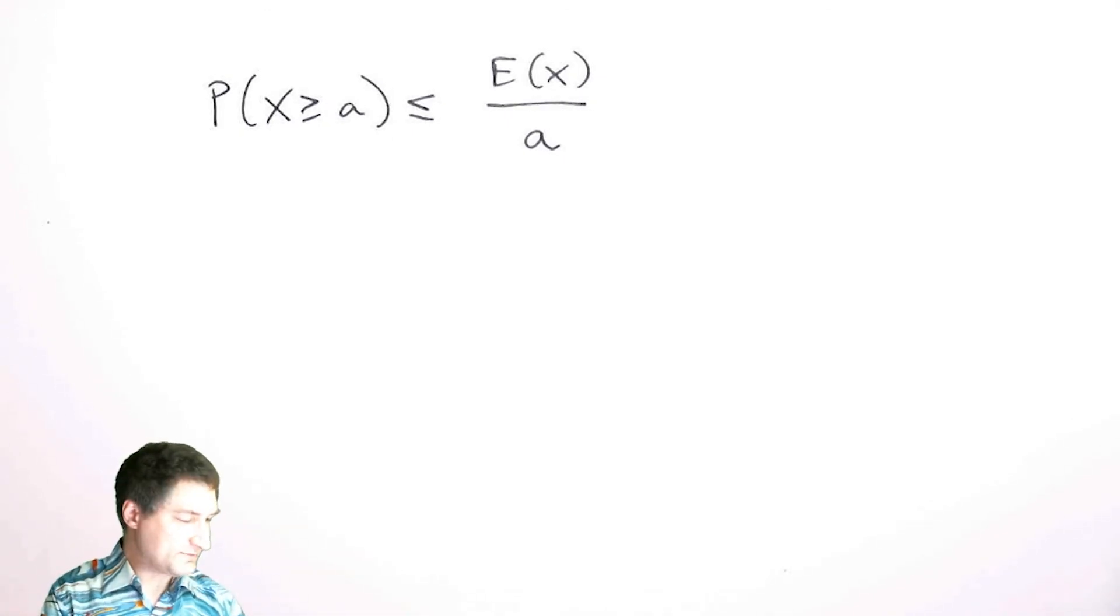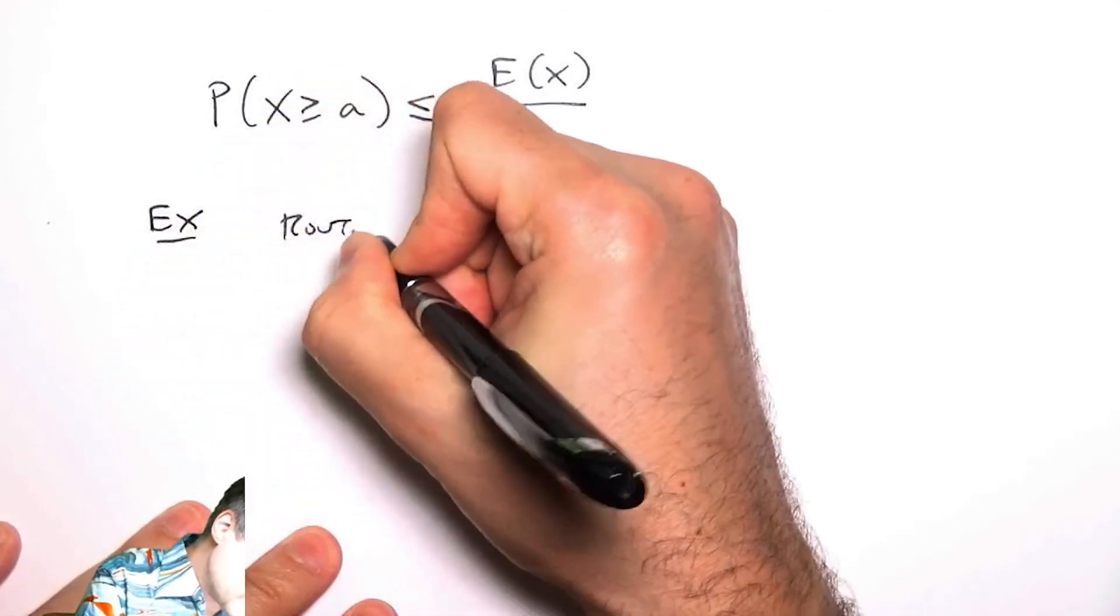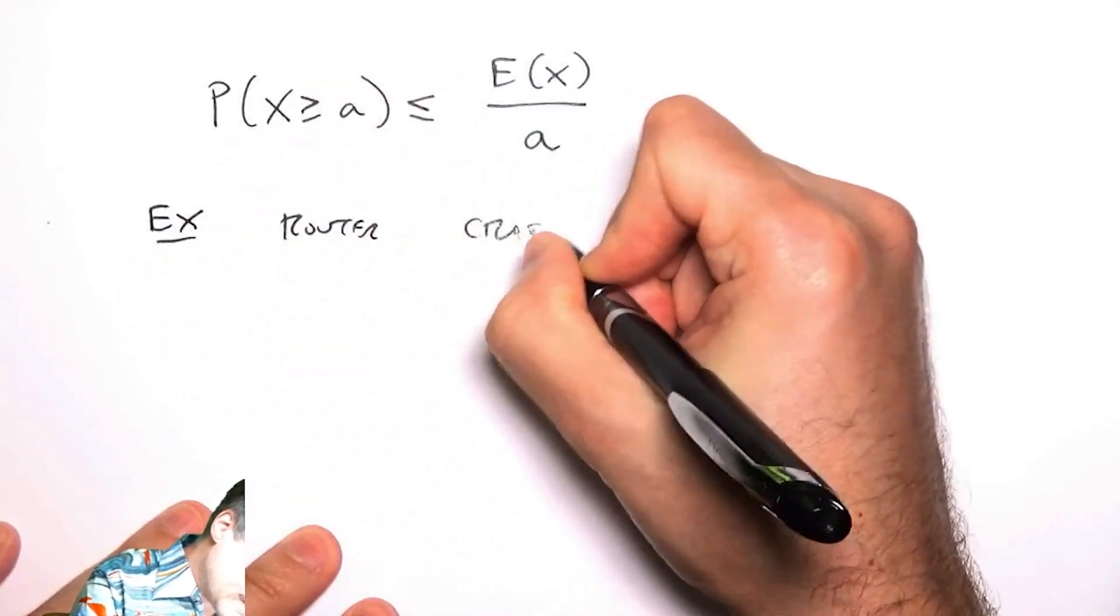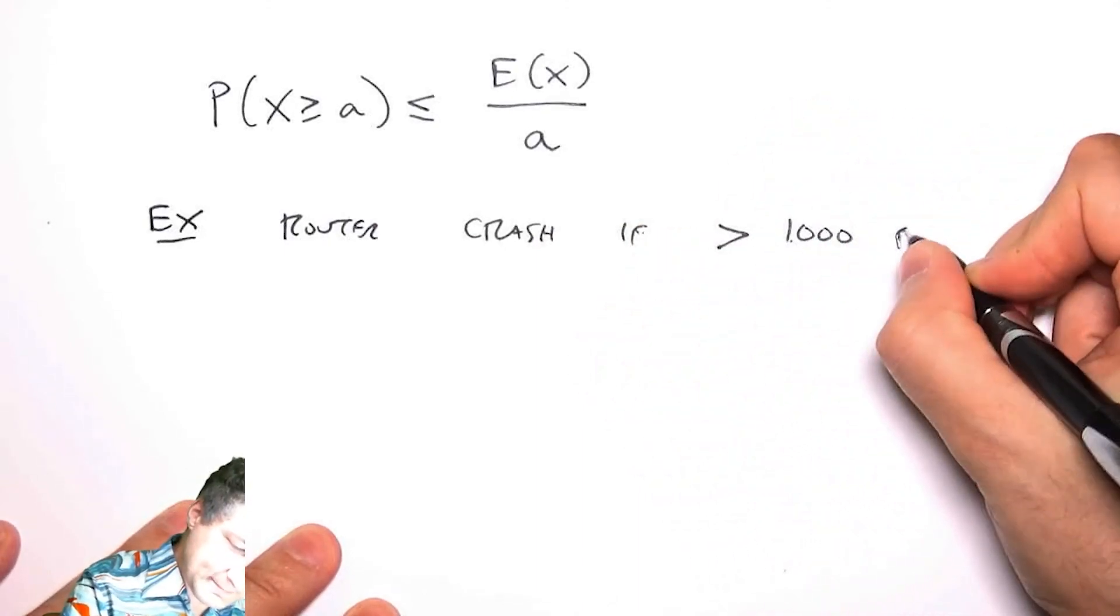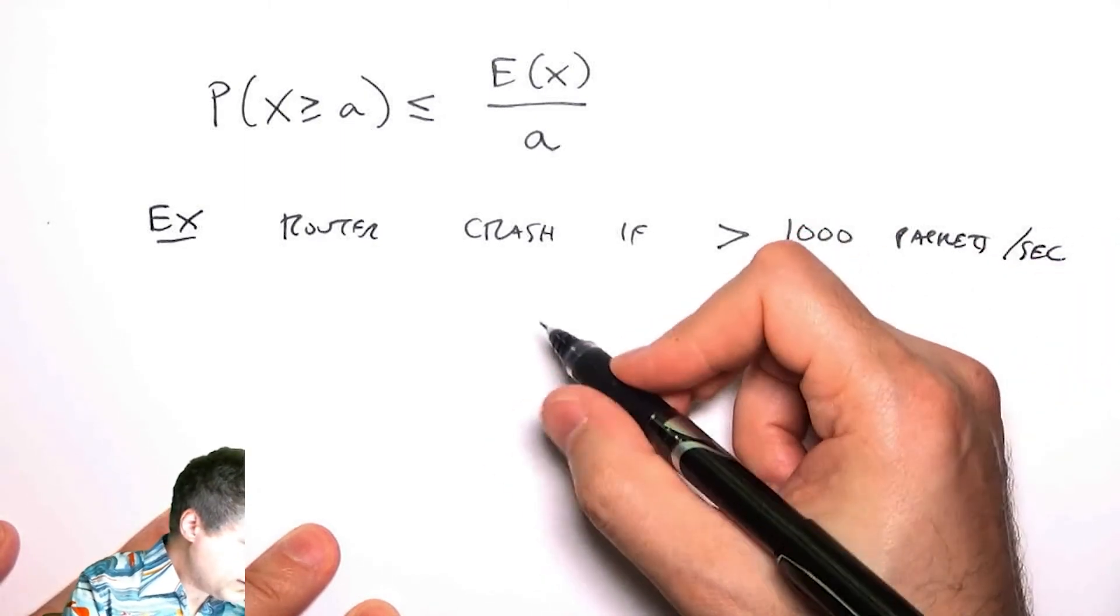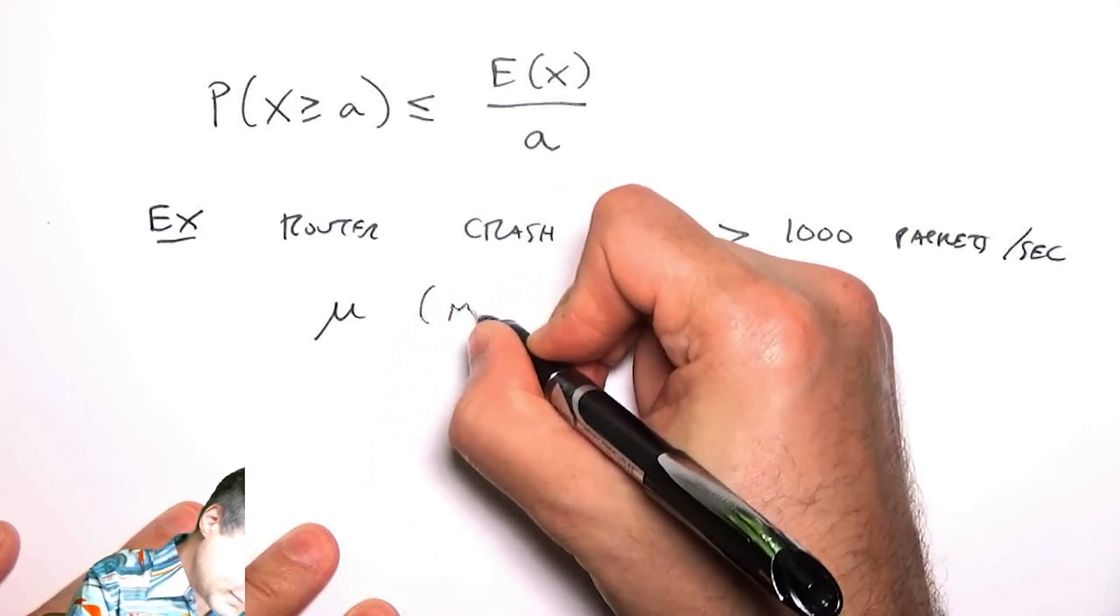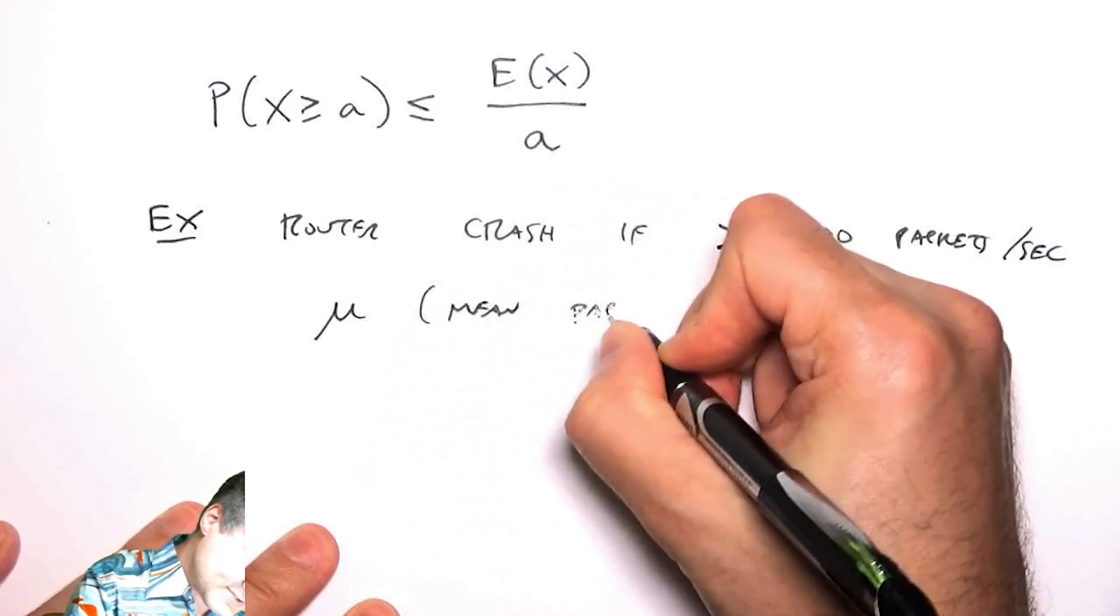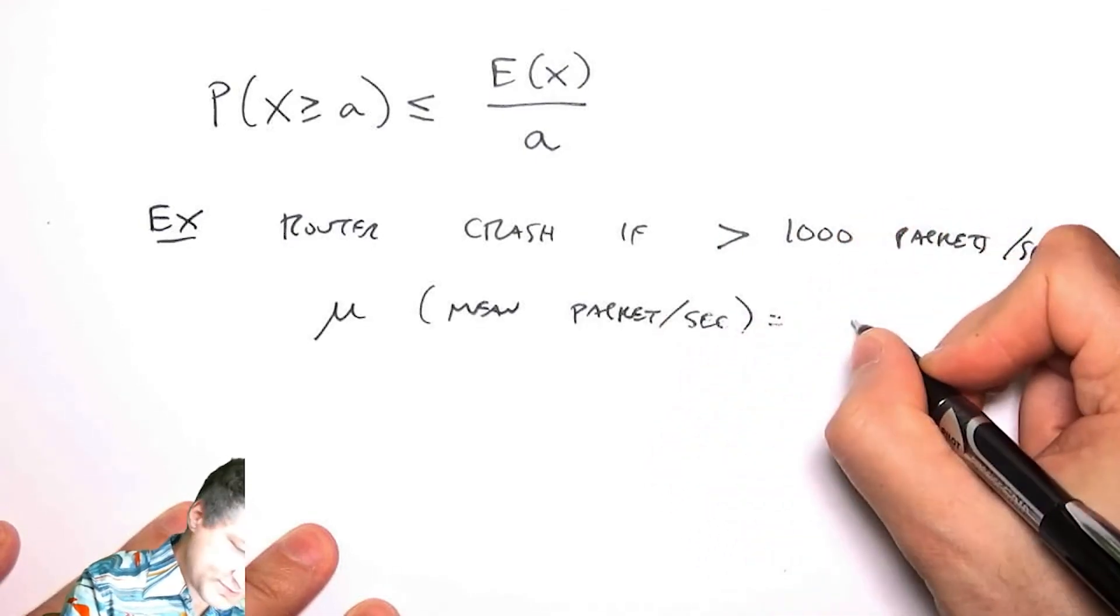This actually gives me something immediately useful even though I don't know anything about the actual form of the PDF. For example, let's suppose I have a router that crashes if I get more than a thousand packets a second, and I know that the average load, the mean packets per second, is equal to 50.